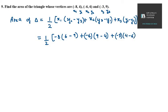y1 is 4 and y2 is 6. So you get half times [-8(6 - 9) + (-6)(9 - 4) + (-3)(4 - 6)]. This equals half times [-8(-3) + (-6)(5) + (-3)(-2)].